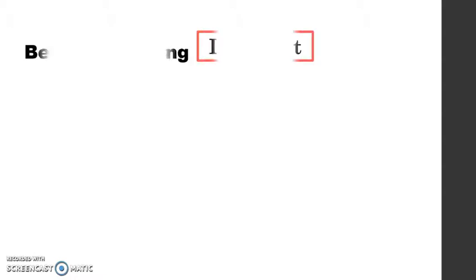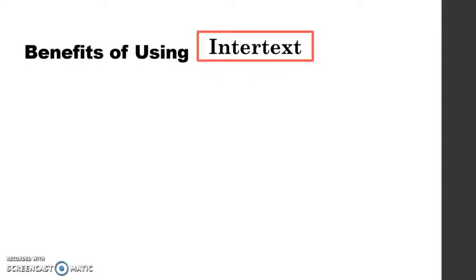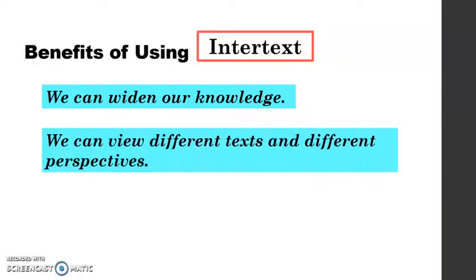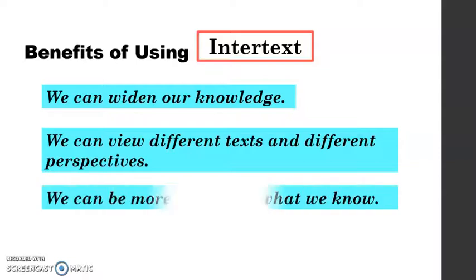Present-day texts are believed to have been based on or at least inspired by previously published literature. While intertextuality seems to be largely applied in the field of literature, it also has applications for academic and work-related reading. We can benefit from intertextuality in three ways: first, we can widen our knowledge — reading more leads to knowing more. Second, we can view different texts from different perspectives, helping us avoid a fundamentalist or strictly literal view of things. Lastly, we can be more certain of what we know, as finding ideas that match previous authors helps validate and make information more credible.